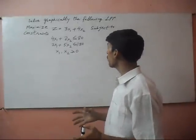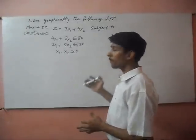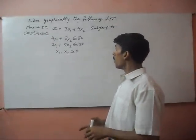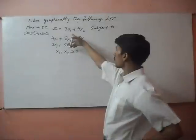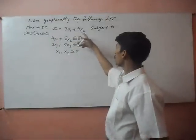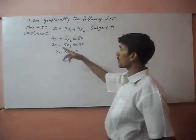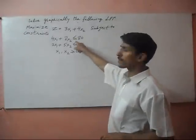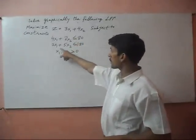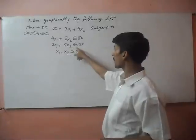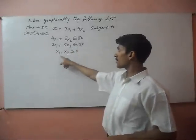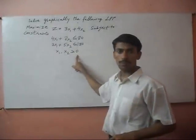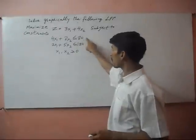Today we will solve a linear programming problem with the graphical method. We are given: maximize z = 3x1 + 4x2, subject to the constraints 4x1 + 2x2 ≤ 80, and 3x1 + 5x2 ≤ 180, where x1 and x2 ≥ 0. These are the conditions.